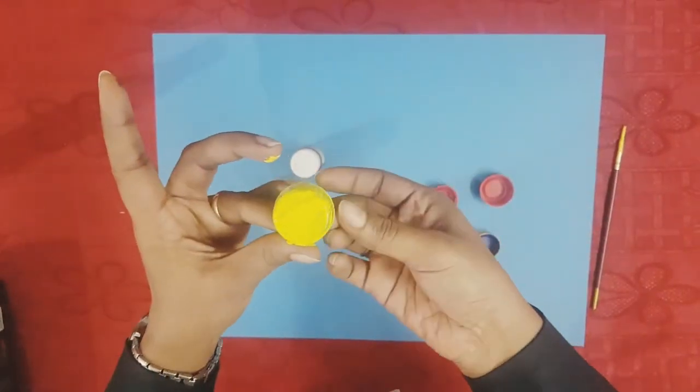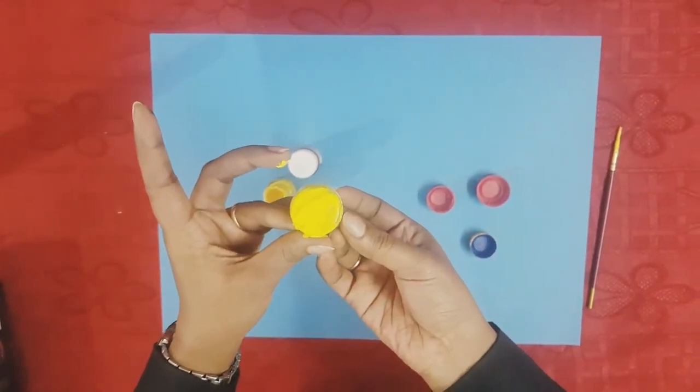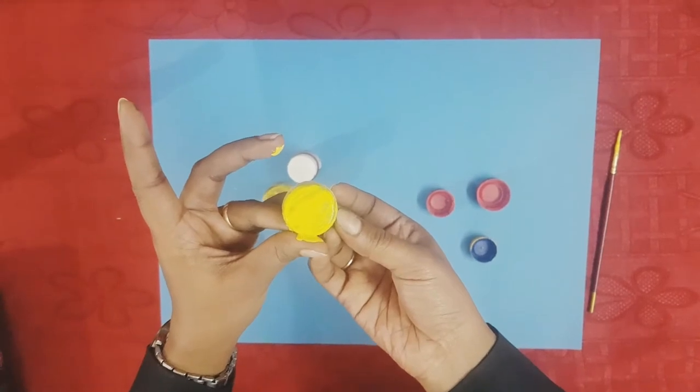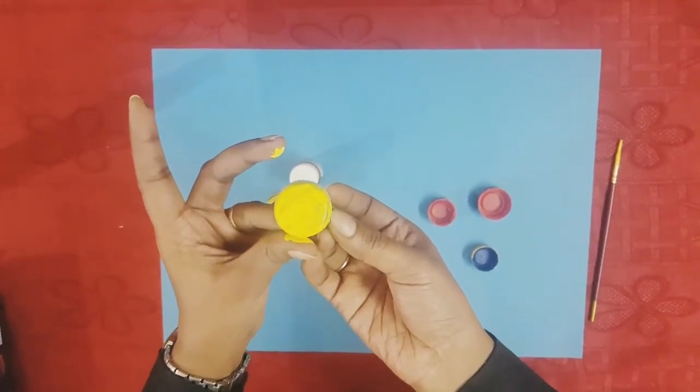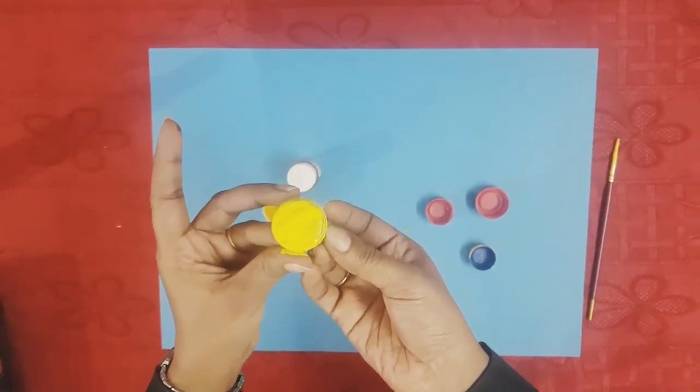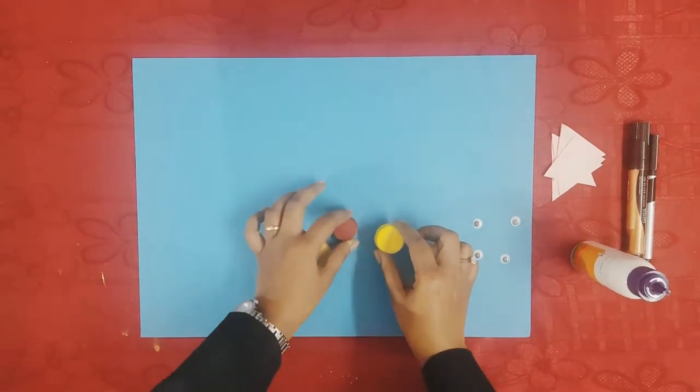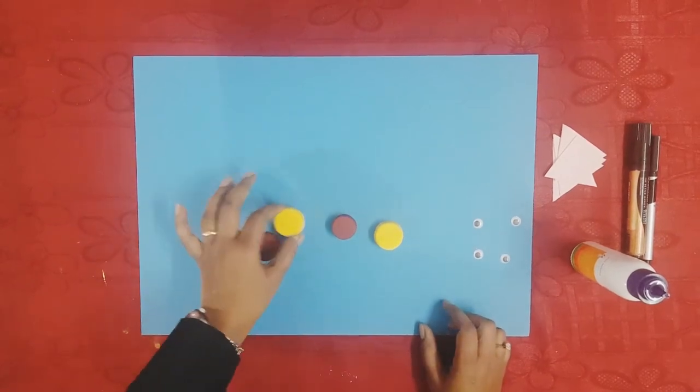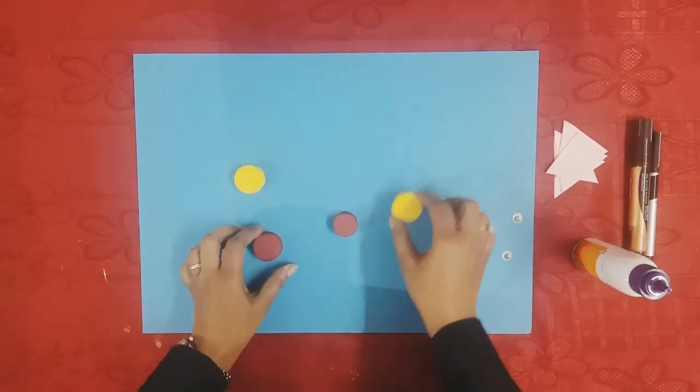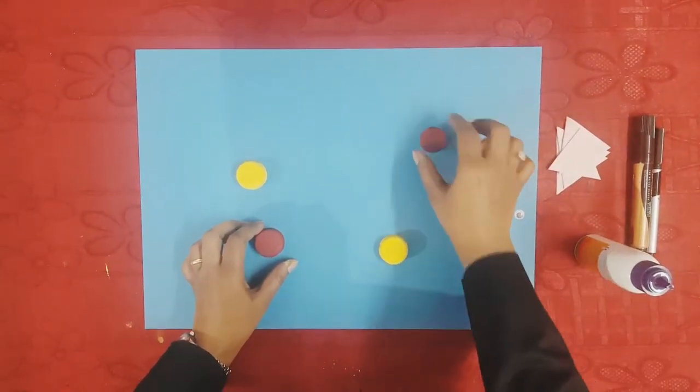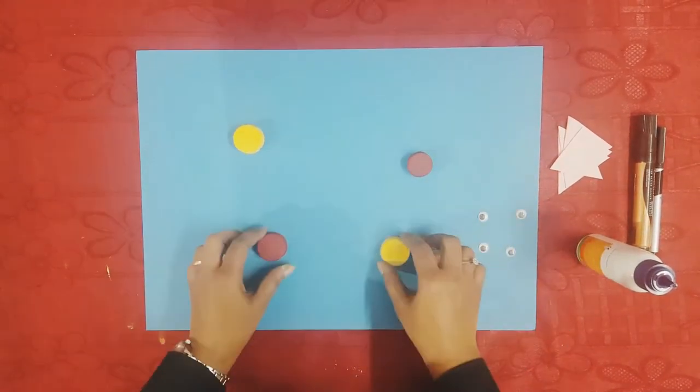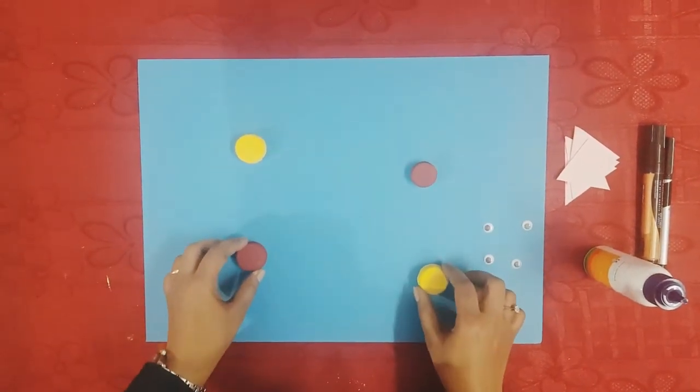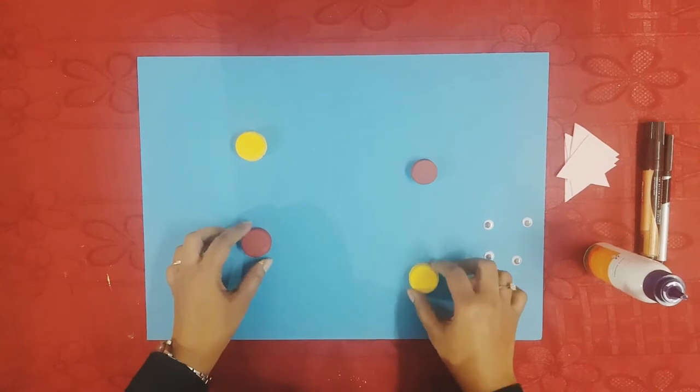Now after coloring the bottle caps keep it in a dry place and let it dry for some time. Now this is how the bottle caps are going to look after it is dry. Now we will place the bottle caps like this, you can place it anywhere you want to place.